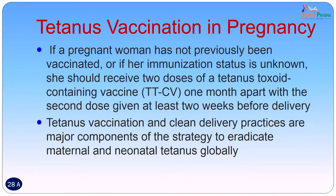Tetanus vaccination in pregnancy is important. If a pregnant woman has not previously been vaccinated or her immunization status is unknown, she should receive 2 doses of a tetanus toxoid-containing vaccine (TTCV) one month apart, with the second dose given at least 2 weeks before delivery. Tetanus vaccination and clean delivery practices are major components of the strategy to eradicate maternal and neonatal tetanus globally, and India has successfully managed to achieve this.